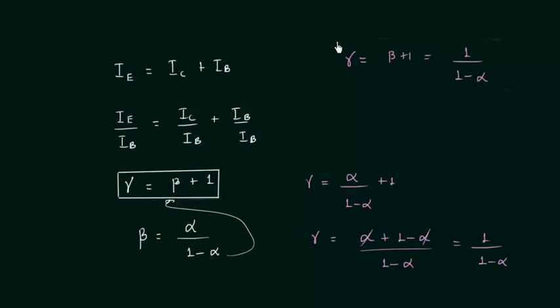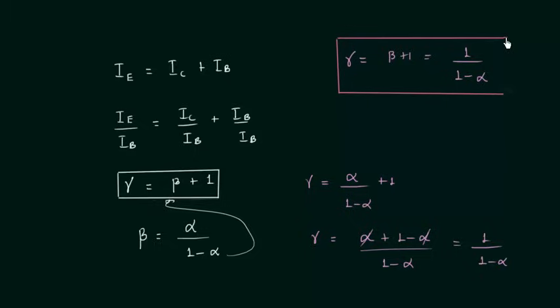So finally, gamma equals beta plus 1, which equals 1 divided by 1 minus alpha. This is the relation between alpha, beta and gamma — the three amplification factors for common base configuration, common emitter configuration and common collector configuration. This is all for this lecture. See you in the next one.